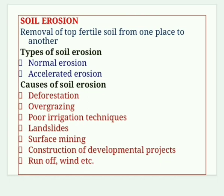Soil erosion is the removal of the top layer of fertile soil from one place to another. Two types: normal erosion — gradual removal of topsoil by natural processes like wind and water; and accelerated erosion — caused by human activities like mining, overgrazing and deforestation. Causes of soil erosion include deforestation, overgrazing, poor irrigation techniques, landslides, surface mining, construction activities, runoff, water and wind.